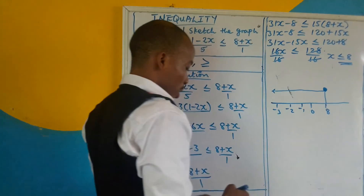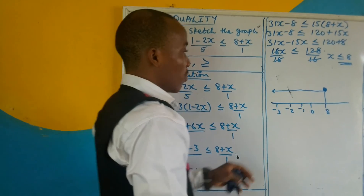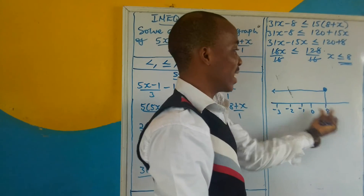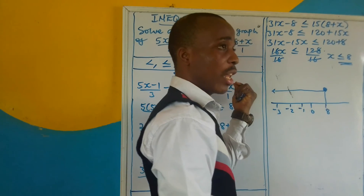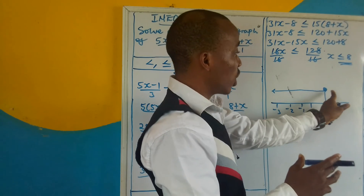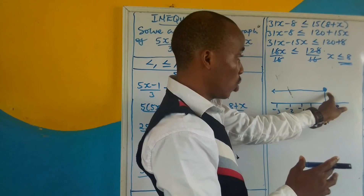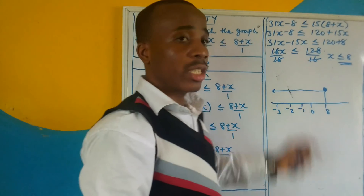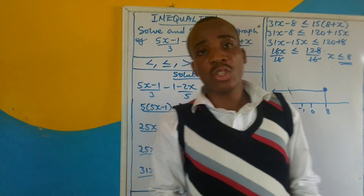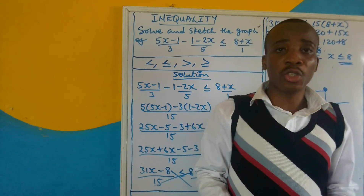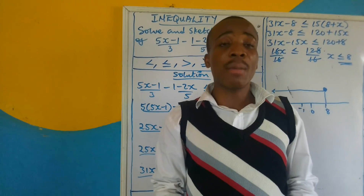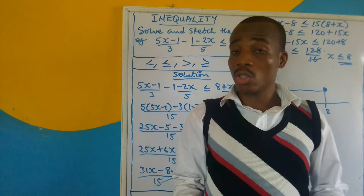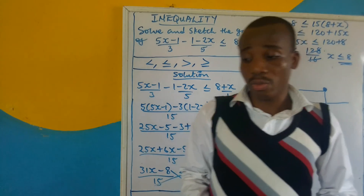So this is the graph. x is less than or equal to 8, so you shade to the left. If it was not equal to, you won't shade the point here. I hope this video was really helpful to you. If it was, smash the subscribe button, leave a like on this video, and share this video. I really appreciate that. I'm going to see you on the next video — thanks so much for being here.